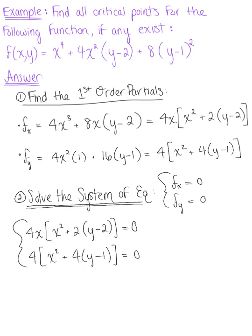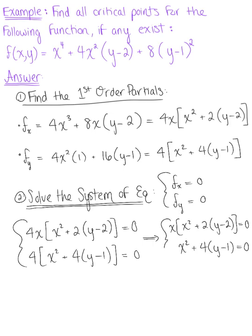Because smaller numbers are easier to work with, we can divide both equations by 4. This leaves us with x multiplied by (x squared plus 2 times (y minus 2)) equals 0, and x squared plus 4 times (y minus 1) equals 0. Here is our simplified system of equations.